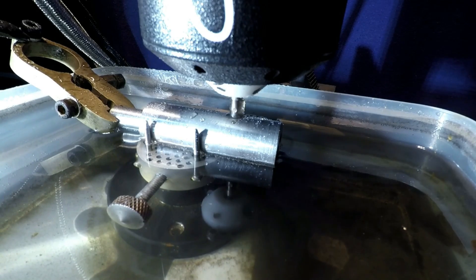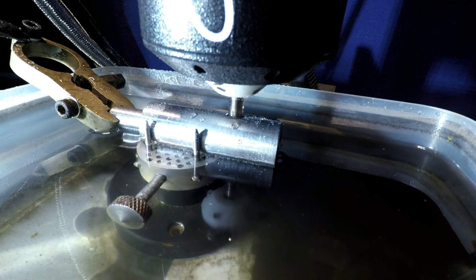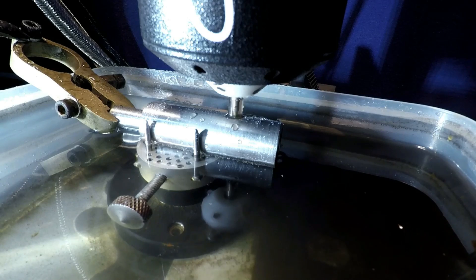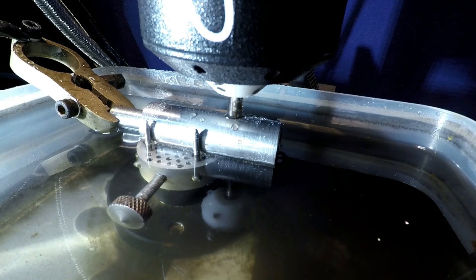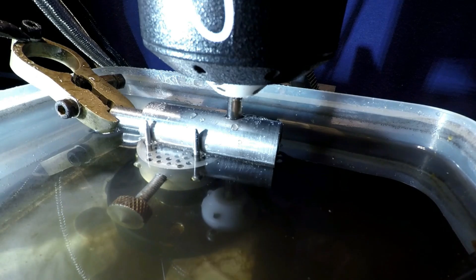The spark time is set to a very conservative 200 microseconds on and 200 microseconds off. The spark current is 10 amps. The broken tap is an M5 high-speed steel tap and just over six millimeters long.